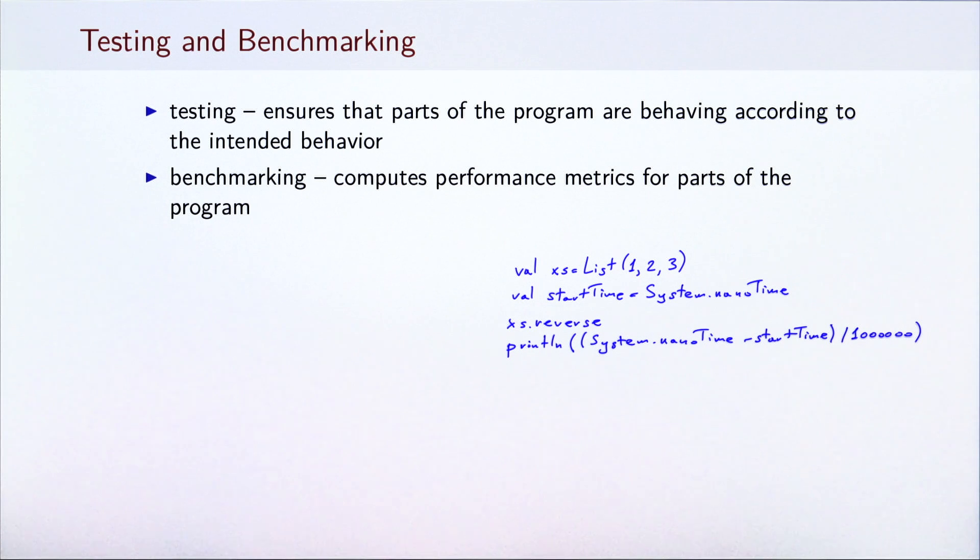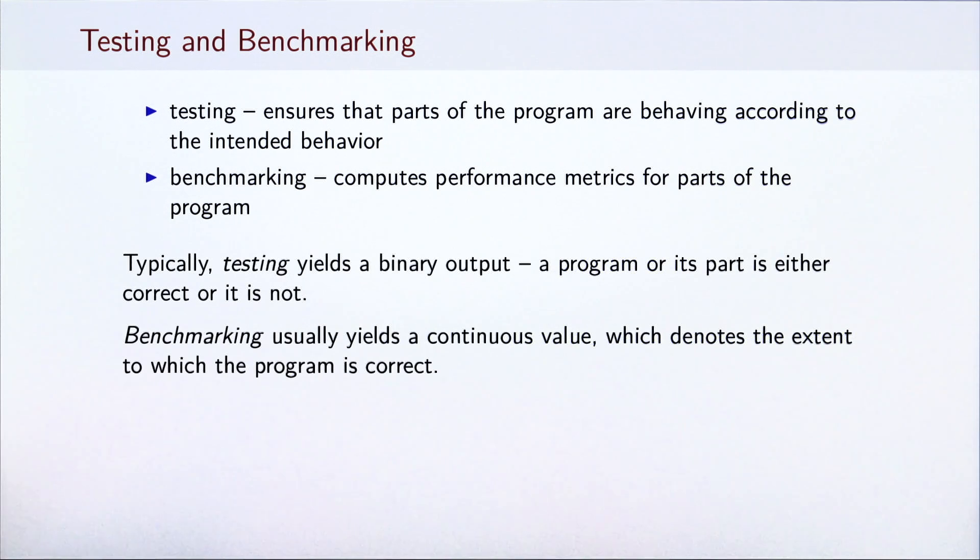This is a very naive way of evaluating the running time of the reverse function, but we start with this for illustration purposes. There is one important difference between benchmarking and testing. Typically, testing yields a binary yes or no answer. The program is either correct or it is not. In the previous example, the list is either equal to the expected list or it is not. There is no other possibility aside from raising an exception, which is also considered incorrect.